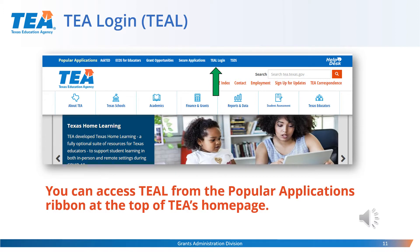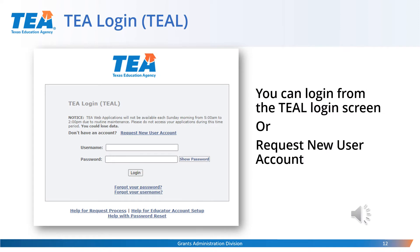Be sure all staff that need access to TEA grants have access as early as possible, and that new and existing staff have the correct roles for completing the application. By selecting the TEA Login link on the Popular Applications ribbon, you will be taken to the TEA login screen. If you don't have a TEAL account, click on the Request New User Account link. If you have a new superintendent or designee who will be the grantee official certifying and submitting the application, work with them to get their TEAL access as early as possible.